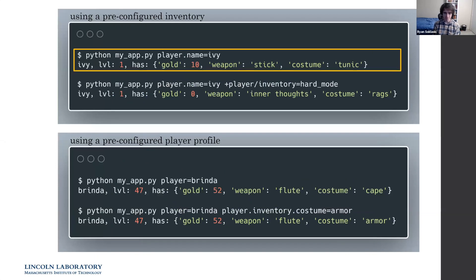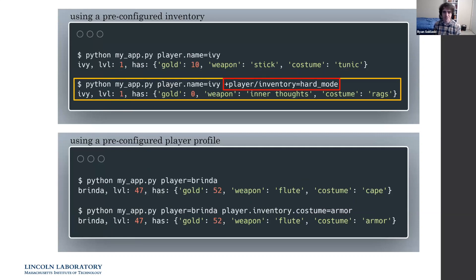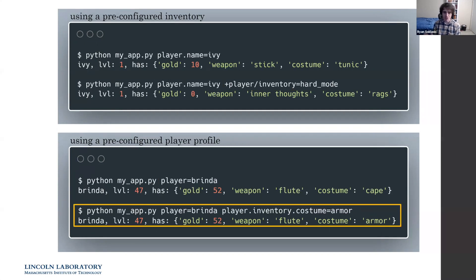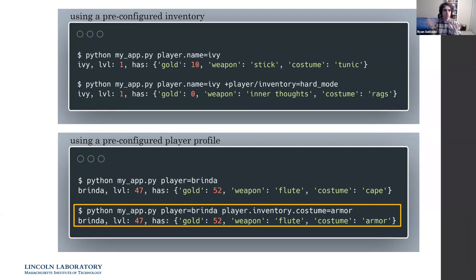Using these groups looks like: giving Ivy the hard mode inventory loadout with simply player.inventory=hard_mode, loading Brenda's character profile with player=Brenda, or loading Brenda's profile and this time giving her armor instead of a cape. In your real projects, you might have configurations for dataset A, B, and C that you swap by name from the command line, or a baseline model from a research paper versus your improved model — you create pre-built configurations and swap them by name in your experiments.